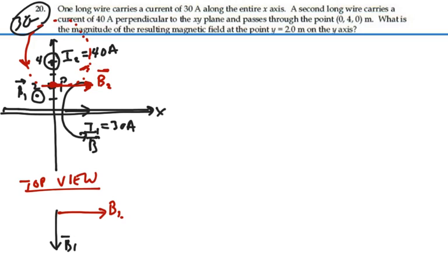that's going out of the page in a positive z-direction. And they'll be perpendicular to each other. So our resultant magnetic field will be the vector sum of these two.